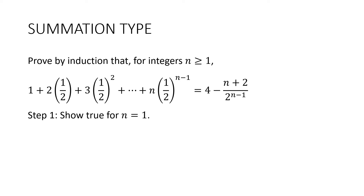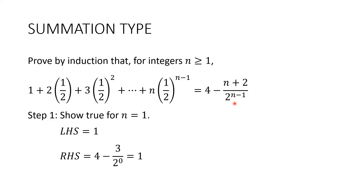Step one: we need to show that it's true for n equals one. We have two options — we can either just take the first term or substitute one in and show it equals what we get when we put one into the expression. Left hand side is equal to one. Right hand side will be four take away three divided by two to the zero. Two to the zero is one, four take three is one. Therefore it's true for n equals one.